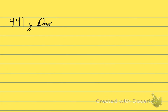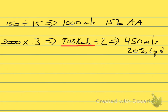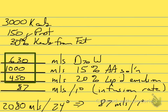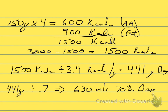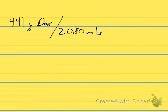We have 441 grams of dextrose and our total volume is 2,080 mL. If I take the grams of dextrose and divide by the total volume of the admix, we end up with a final concentration of dextrose of 21.2%. Then we do the same thing with amino acids — our protein was 150 grams divided by the total volume of 2,080 mL, giving a final amino acid concentration of 7.2%.